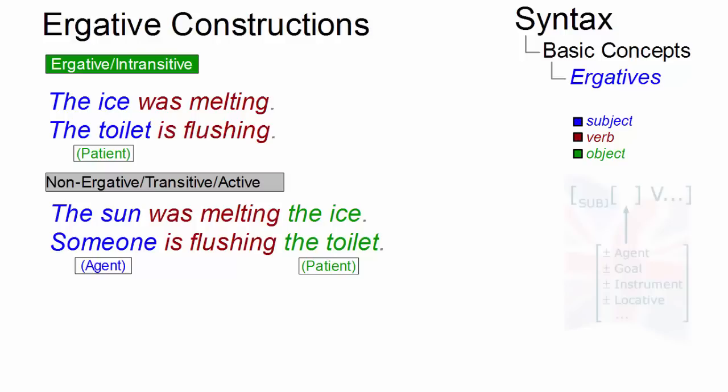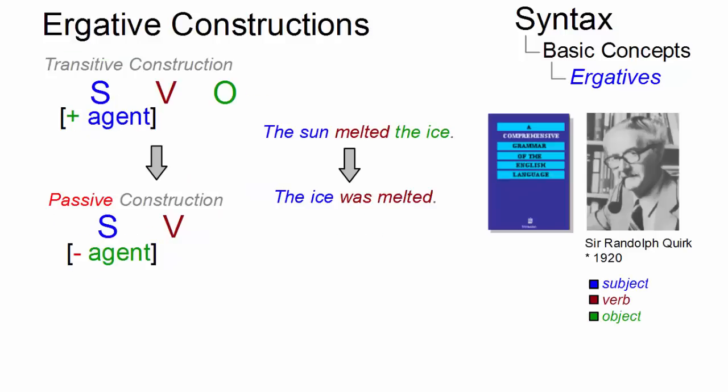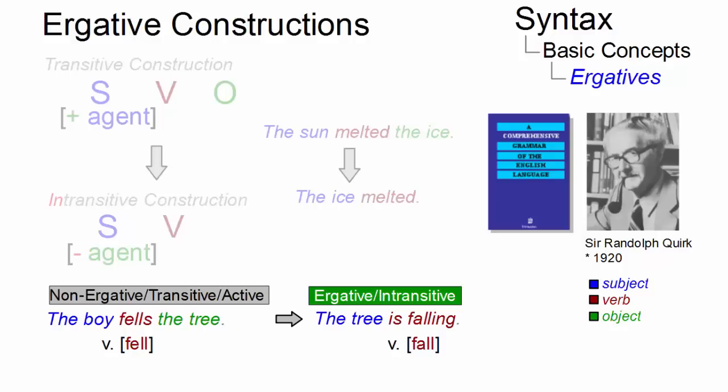In languages other than English, ergatives are often realized as passives, or they involve different verbs — like, for example, in present-day English, fall versus fell.